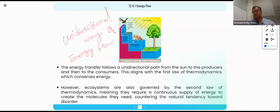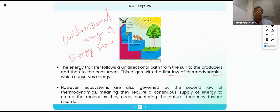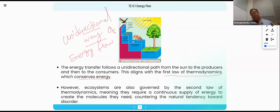The plant is taken by the herbivore animal, herbivore animals are eaten by the snakes, snakes are taken by the eagle — there is no reverse flow of energy. That is the reason why we are saying the unidirectional flow of energy, which is kept under the first law of thermodynamics, which conserves energy. Energy is neither created nor destroyed, but transferred from one form to another form.